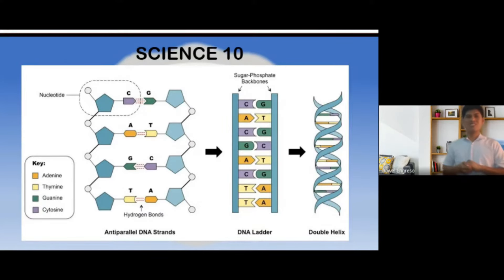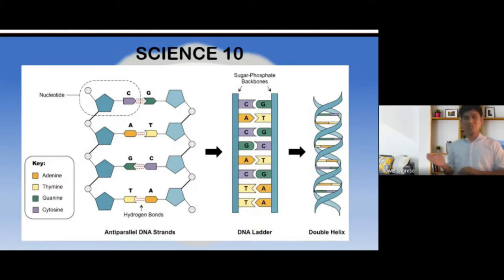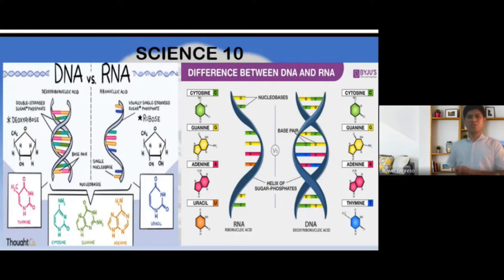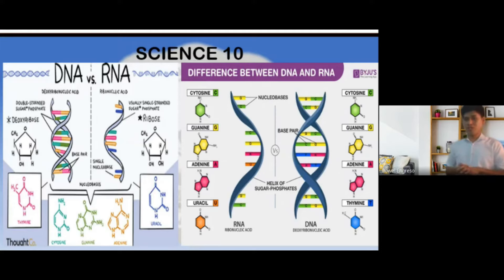The diagram shows a segment of DNA. A segment of DNA comprises a series of nucleotides. A series of nucleotides can actually form a long strand of a nucleic acid. A nucleotide comprises three important components: the phosphate group, the sugar component, and the nitrogenous bases. They are arranged in a double helix structure, like what you've seen. The diagram shows the comparison between DNA and RNA, including the molecular structure of the four nitrogenous bases, the sugar component, and its structure.